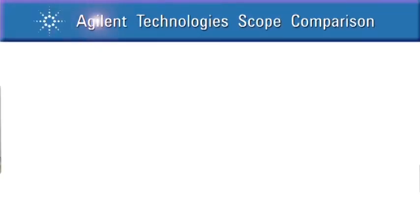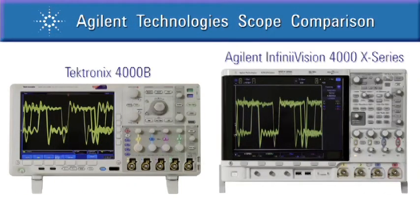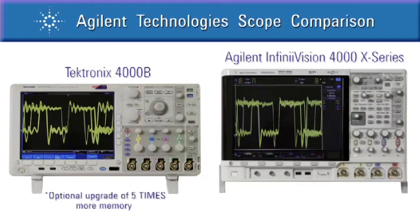Next, let's compare the memory architectures of each scope. The Tektronix 4000b can optionally have up to 5 times deeper memory than the Agilent 4000x series, but deeper memory is not always better.